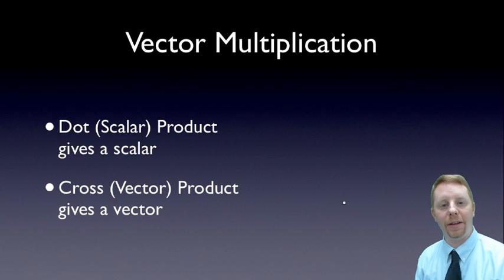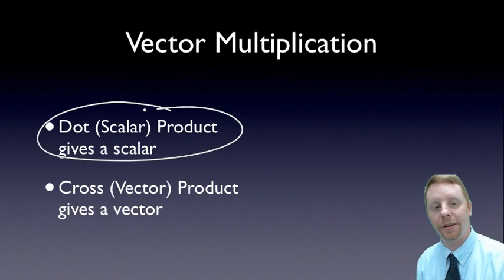What we're really talking about here is vector multiplication, and there are two ways you can multiply vectors. First, you take a vector, multiply it by another vector, and you get a scalar. That's known as the dot product or scalar product, and that's what we're going to focus on today.